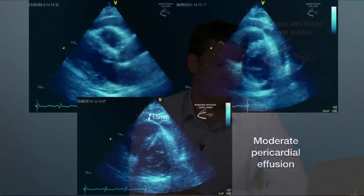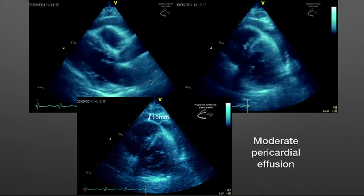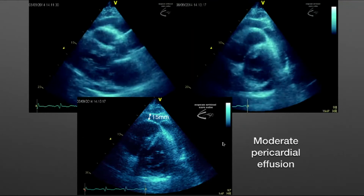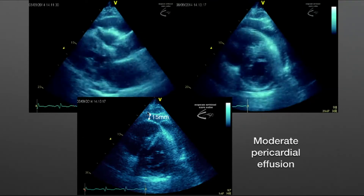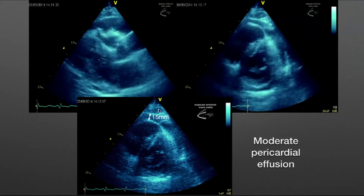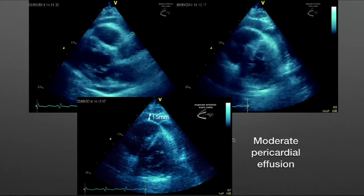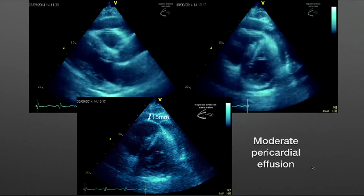This is an example of a moderate pericardial effusion — you wait until end diastole and make the measurement, and here it's between 10 and 20 millimeters, confirming a moderate pericardial effusion.